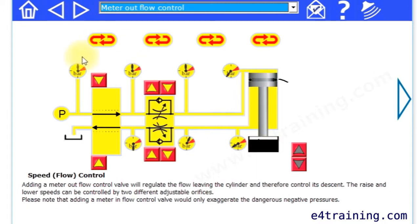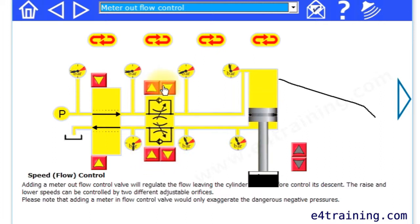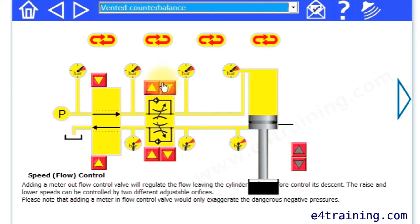We don't want the uncontrolled load. We put in a meter out flow control valve and you can experiment, open and close the orifice sizes here to see what happens. Do both of them. You can change it to meter in and see what happens in that case as well, watching the pressures at the various stages.